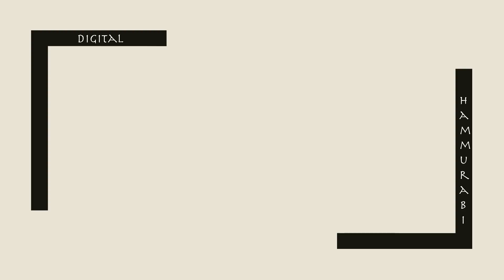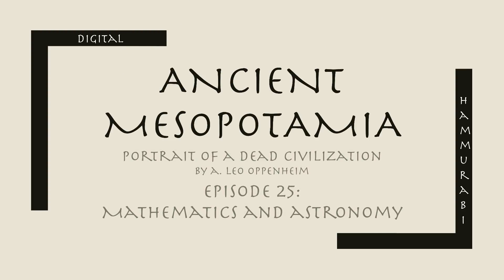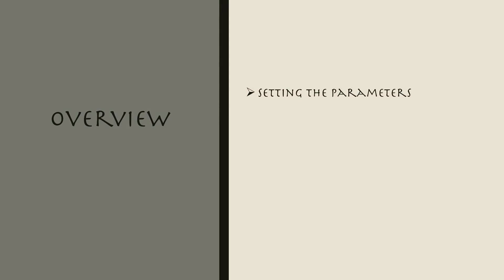Welcome back everyone to episode 25 of Ancient Mesopotamia: Portrait of a Dead Civilization. This is going to be a short video because we're talking about things that I know very little about — and those things are mathematics and astronomy, areas in school that I wish I would have studied more. We're going to very briefly look at setting the parameters of this study and examine mathematics and astronomy.